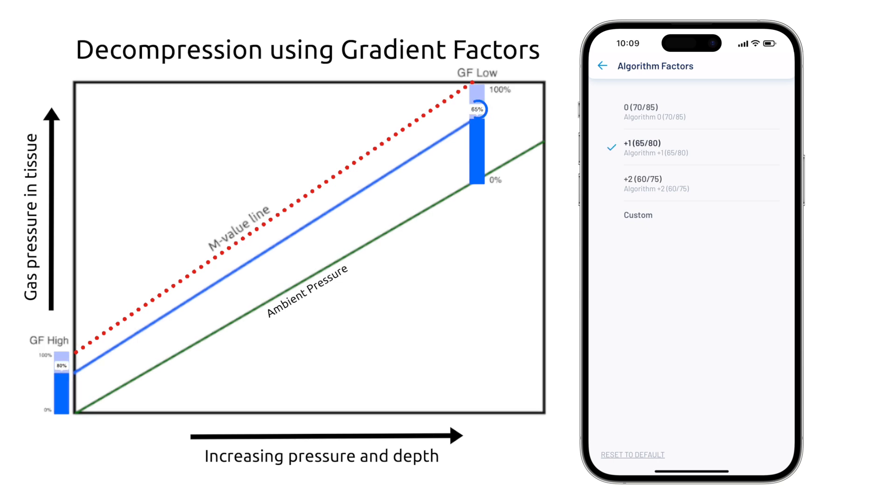The plus 1 option is 65-80, which provides 20% conservatism, and plus 2 option is 60-75, which provides 25% conservatism. In general, the more conservative the dive, the less likely you are to experience decompression sickness. You can also avoid getting out of the water with more nitrogen saturation, reducing common post-dive fatigue.